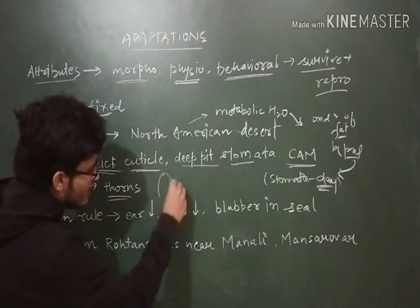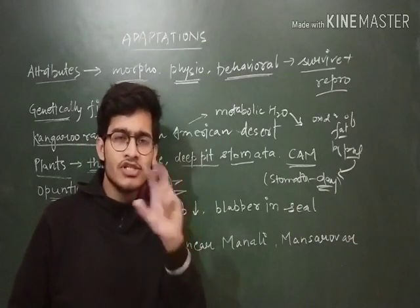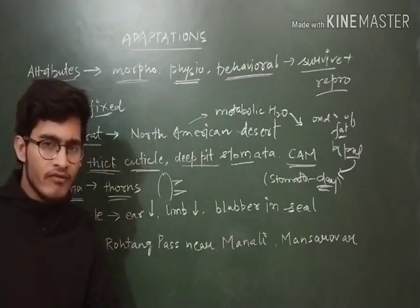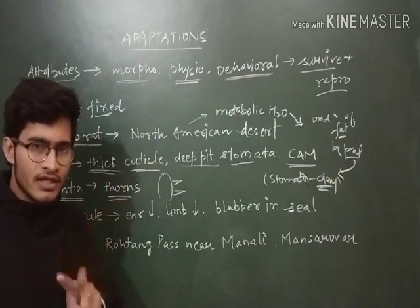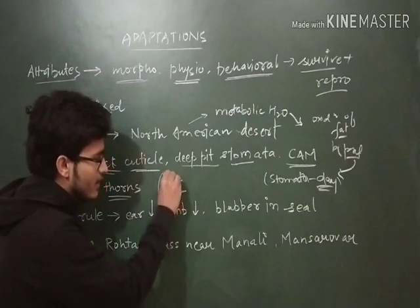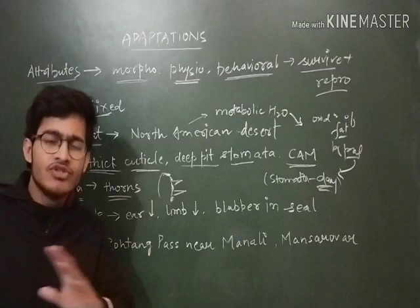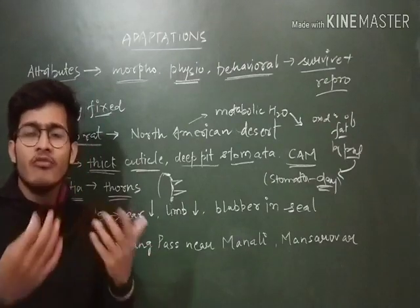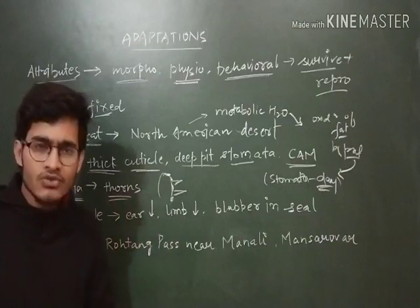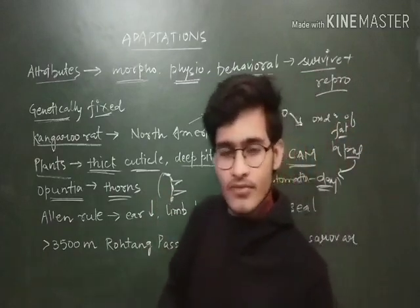For example, in case of Opuntia, there are thorn-like structures which are quite pointed — the surface area is very small and therefore transpiration is very low, because transpiration requires a flat, free surface. There are no leaves in Opuntia — only thorns. But how does it perform photosynthesis? The fleshy part of the stem has adapted itself to perform photosynthesis. If there are no leaves there is no large surface area, no transpiration, no water loss; the thorns have less surface area because they are pointed, so water loss is reduced.